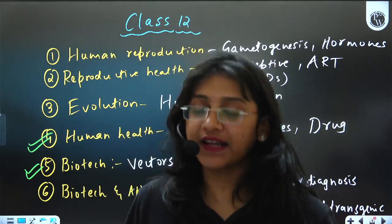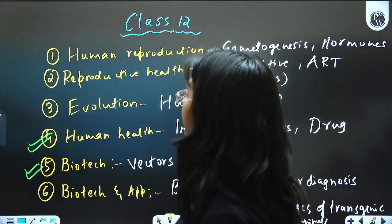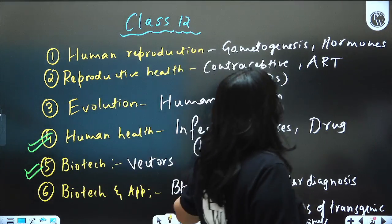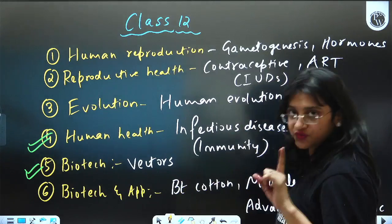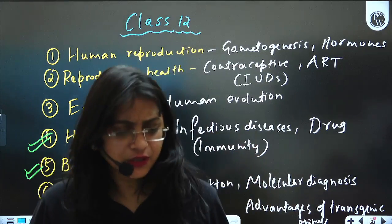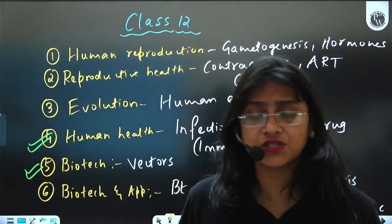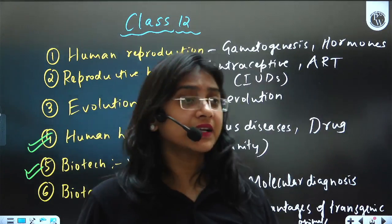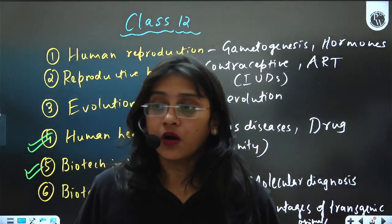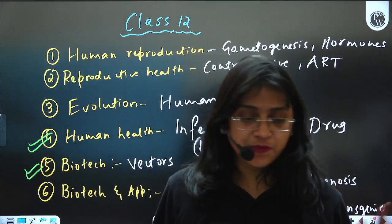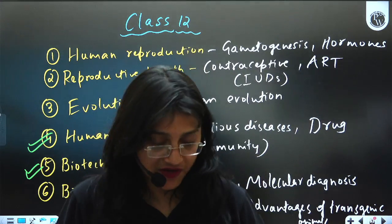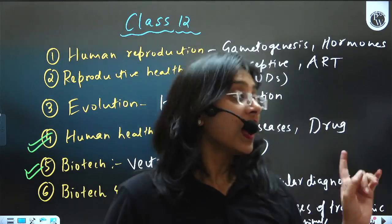The very first chapter is Human Reproduction. From gametogenesis, one question will be asked every year — either a match-the-following, statement-based, or a simple question related to spermatogenesis, oogenesis, or maybe the differences between spermiation, spermatogenesis, and spermiogenesis. All these things can be asked.